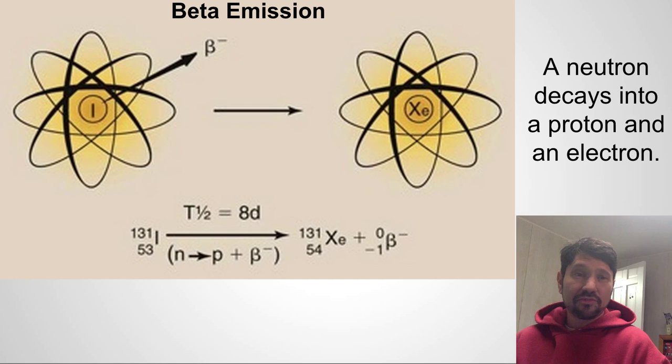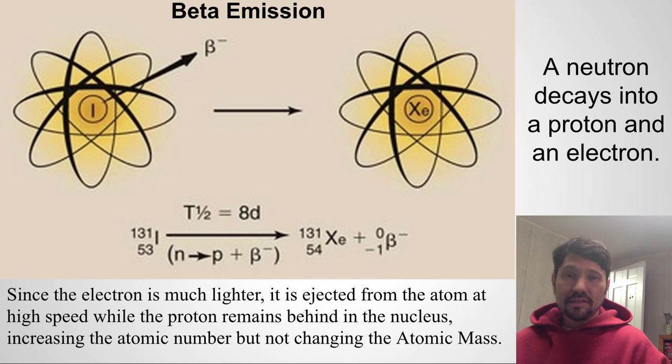Beta emission occurs from a moderately unstable nucleus, and what happens is a neutron decays into a proton and an electron. Since the electron is much lighter than the proton, it's ejected from the atom at a very high speed, while the proton remains behind in the nucleus. And that extra proton in the nucleus means we've increased the atomic number, but we haven't changed the atomic mass. So we see that iodine has gone to xenon, because we've got one more proton, a higher atomic number, but the atomic mass remains the same, because a proton and a neutron weigh about the same. And here we see our little beta particle, which is really identical to an electron, except it formed by a decaying nucleus.